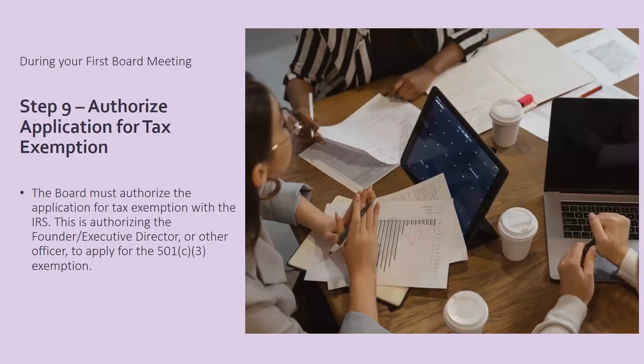Next, it's time to authorize your application for tax exemption. Sometimes the founder will have completed this already, so you will officially vote on accepting those documents. If the founder has not, or if this is a group coming together, then you will decide who completes the information and the form, and decide what goes into the form. This is for your federal tax exemption, which is for your 501(c)(3) status.